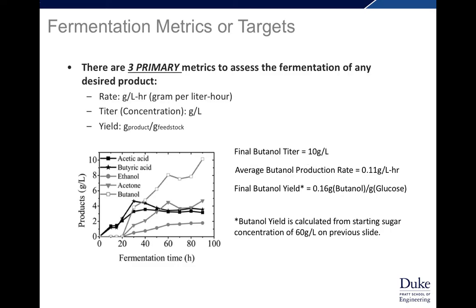There are three primary metrics to assess the fermentation of any desired product: rate, titer, and yield — RTY. Rate is grams per liter per hour, or amount of product per volume per time. Titer is the fancy name for concentration, so grams per liter. And yield would be the grams of product per the amount of feedstock fed in. You can calculate these most times based on simple analysis of fermentation data.